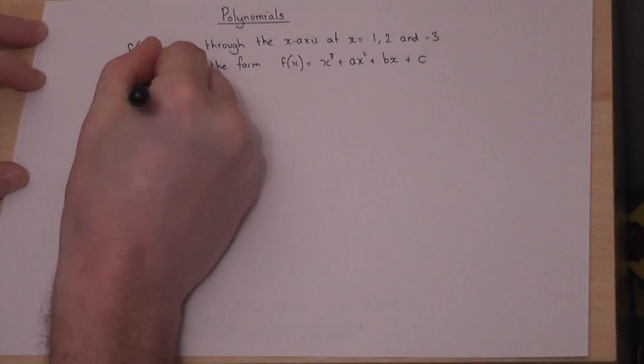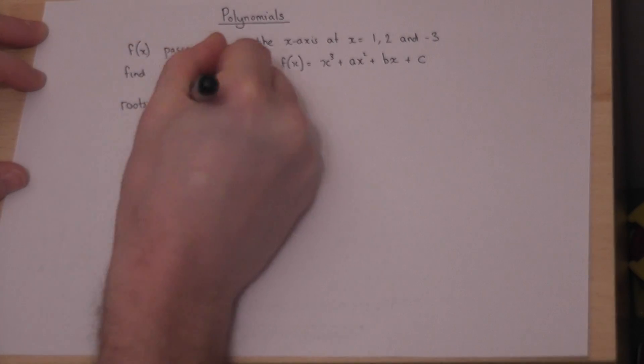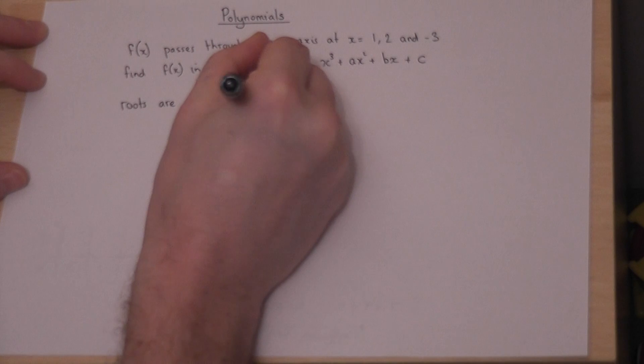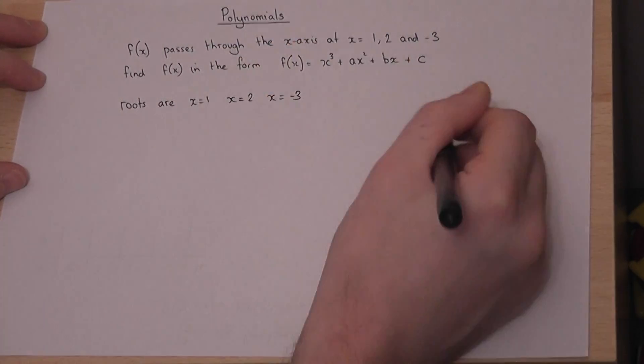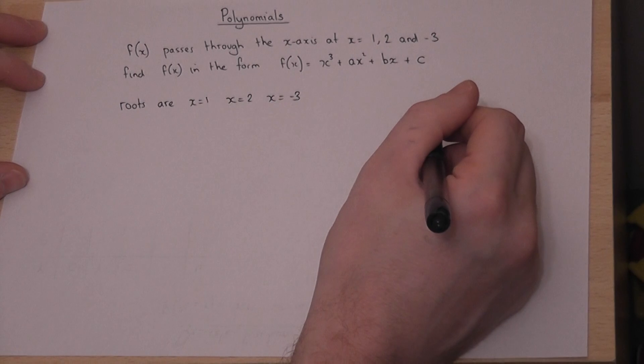then we know the roots are x = 1, x = 2, and x = -3. And what the factor theorem says